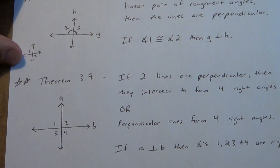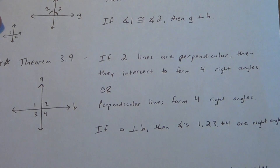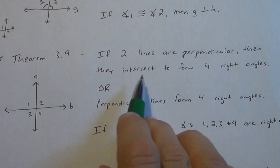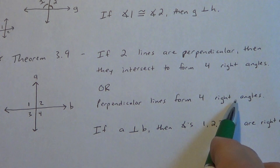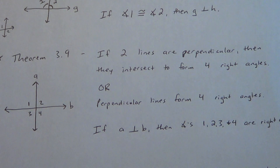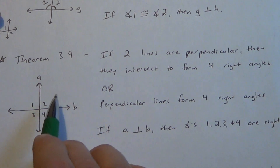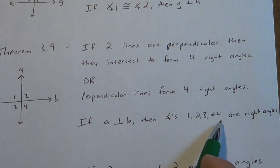Alright, let's go to Theorem 3.9. Theorem 3.9 is two stars — we do use this one a little more frequently. It says if two lines are perpendicular, then they intersect to form four right angles. Or you can just say perpendicular lines form four right angles. Now some of you might be thinking, wait, I thought that was the definition. Not quite. The definition says that perpendicular lines form a right angle — one right angle. This theorem tells us it's not just one right angle, it's actually four right angles. So if line A is perpendicular to line B, then angles one, two, three, and four are all right angles.